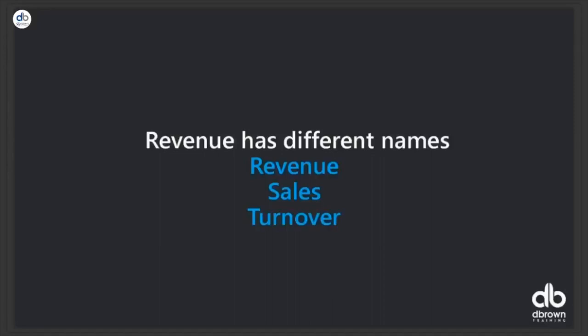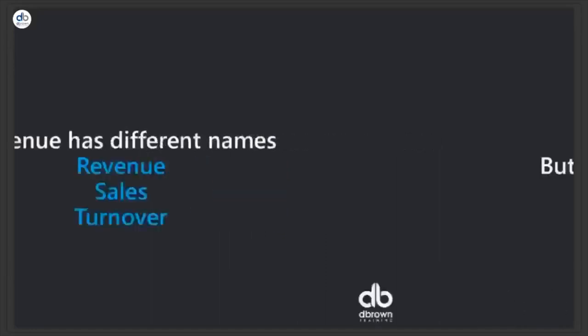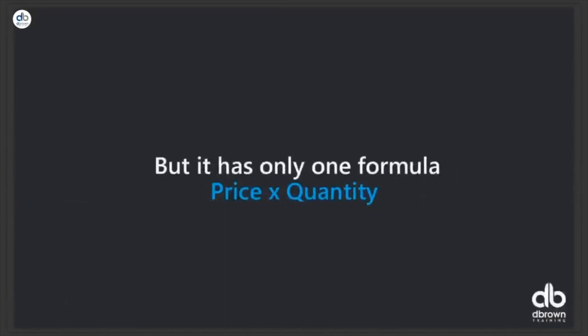For example, what used to be called fixed assets in the balance sheet is now called non-current assets. Profit after tax is the same as net profit, the same as earnings after tax. So what is revenue? Revenue is really price times quantity. When you're building a model for revenue, you need to understand what price is and what quantity is, and how price will change for each product going forward.